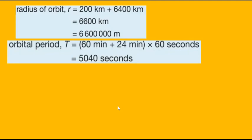The orbital period can be converted into seconds by taking one hour, which is 60 minutes, plus 24 minutes, then multiply the result by 60 to give us 5040 seconds.